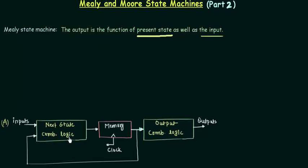We are giving this A to the next state combinational logic and the output of this combinational logic will decide the next state. This is my memory block and the present state is stored here.